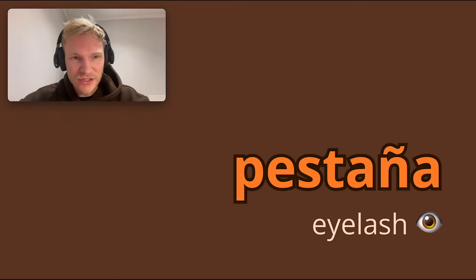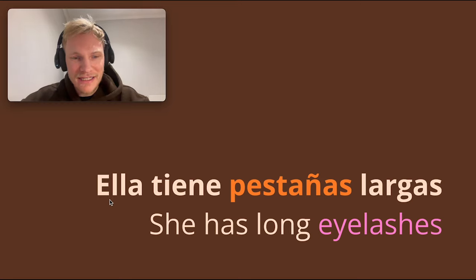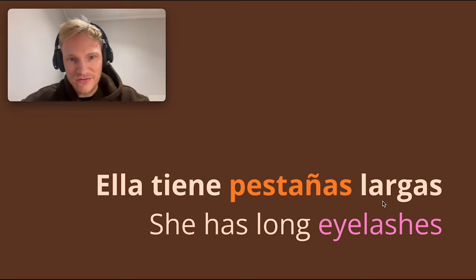The translation is eyelash — una pestaña, feminine. The eñe here really makes that sound. It means an eyelash. Ella tiene pestañas largas — she has long eyelashes. Tener is the infinitive verb meaning to have, and here ella tiene is the third person: she has. Pestañas are eyelashes, and largas means long — the adjective comes after the noun.